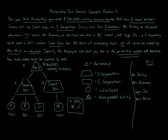To determine the amount each reports through the K-1 process, we take $780,000 and split it between the two entities. Savory reports $390,000 and Sweet reports $390,000. Savory, taxed as a partnership, files Form 1065. Sweet, as an S corporation, files Form 1120S. Because of their entity types, neither pays tax on those amounts — it flows through to the next person via K-1.